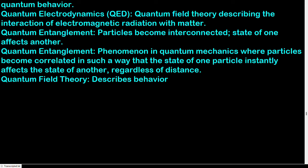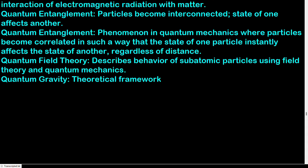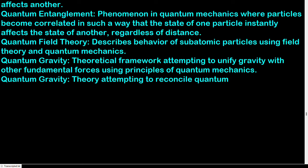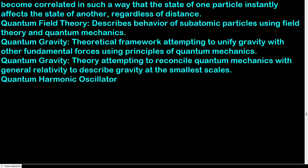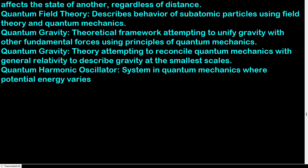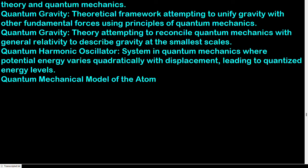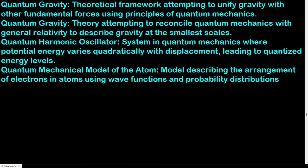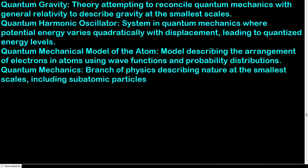Quantum field theory: describes the behavior of subatomic particles using field theory and quantum mechanics. Quantum gravity: theoretical framework attempting to unify gravity with other fundamental forces using principles of quantum mechanics, reconciling quantum mechanics with general relativity at the smallest scales. Quantum harmonic oscillator: system in quantum mechanics where potential energy varies quadratically with displacement, leading to quantized energy levels. Quantum mechanical model of the atom: model describing the arrangement of electrons in atoms using wave functions and probability distributions. Quantum mechanics: branch of physics describing nature at the smallest scales, including subatomic particles and atoms.